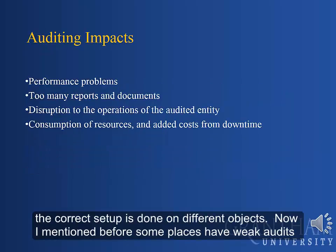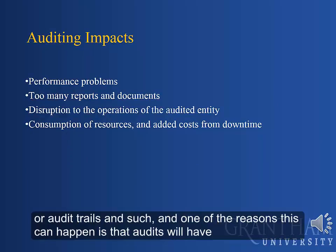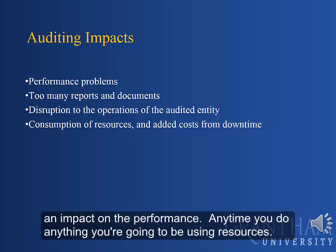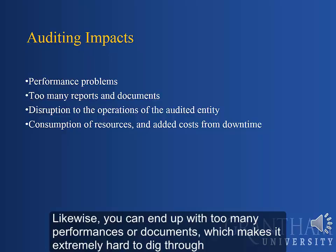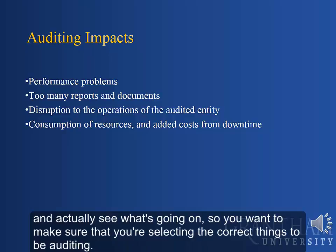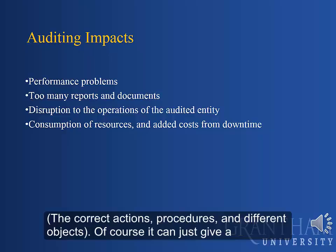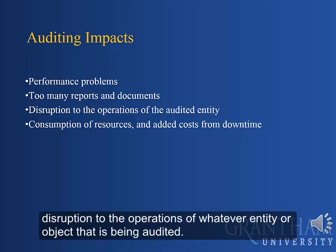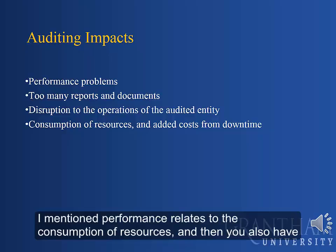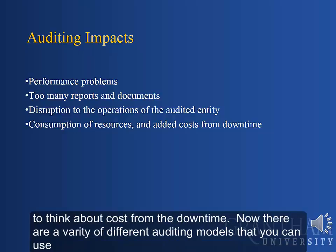Some places have weak audits or audit trails, and one reason this can happen is because audits have an impact on performance — anytime you do anything, you're using resources. You could also end up with too many reports and documents, making it extremely hard to dig through and see what's going on. So you want to make sure you're selecting the correct things to audit — the correct actions, procedures, and objects. Auditing can also cause disruption to the operations of whatever entity or object is being audited, and performance-related resource consumption also brings costs from downtime.